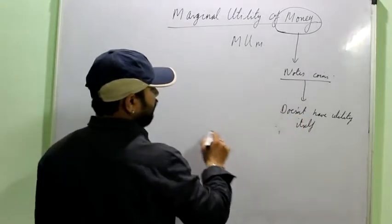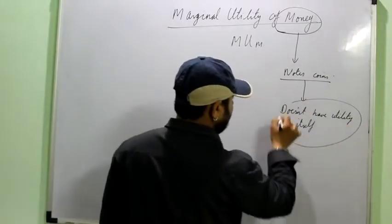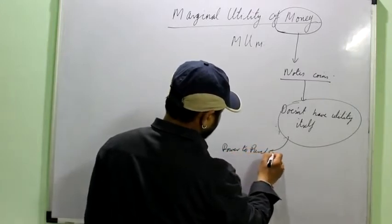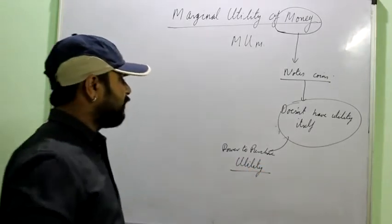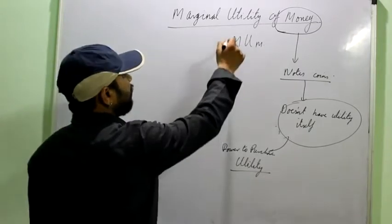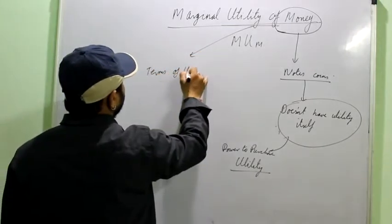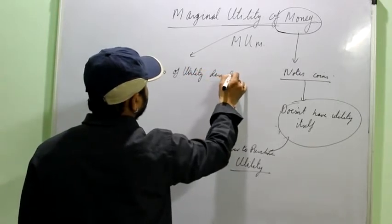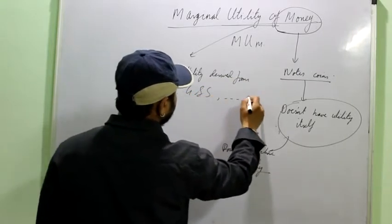Like for example, if you are hungry you cannot eat the currency notes or coins. But money has the power to purchase utility, or you can say it can purchase the goods and services which will provide you utility or help you satisfy your want. So utility of money is basically measured in terms of the utility derived from the goods and services which the money can buy.